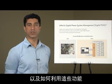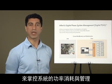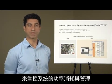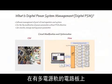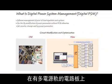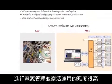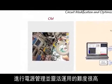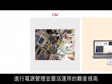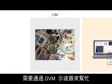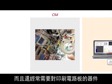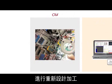To take control of your system's power consumption and management, managing power and implementing flexibility in a high-rail count circuit board can be very difficult and requires engineering hands-on probing with DVMs, oscilloscopes, and often requires reworking of PCB components.